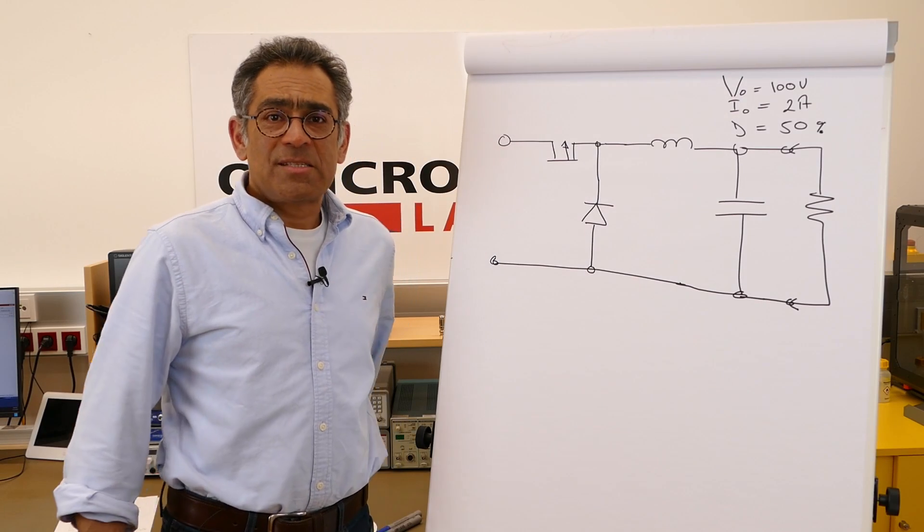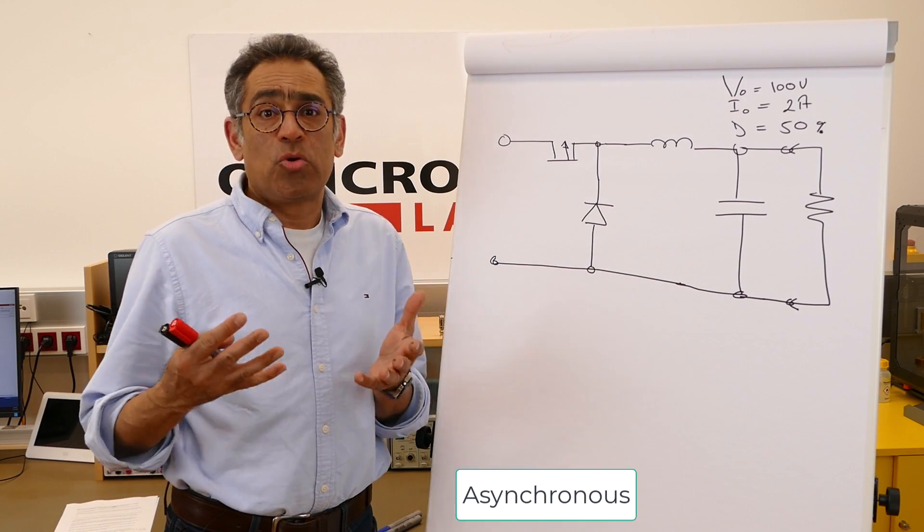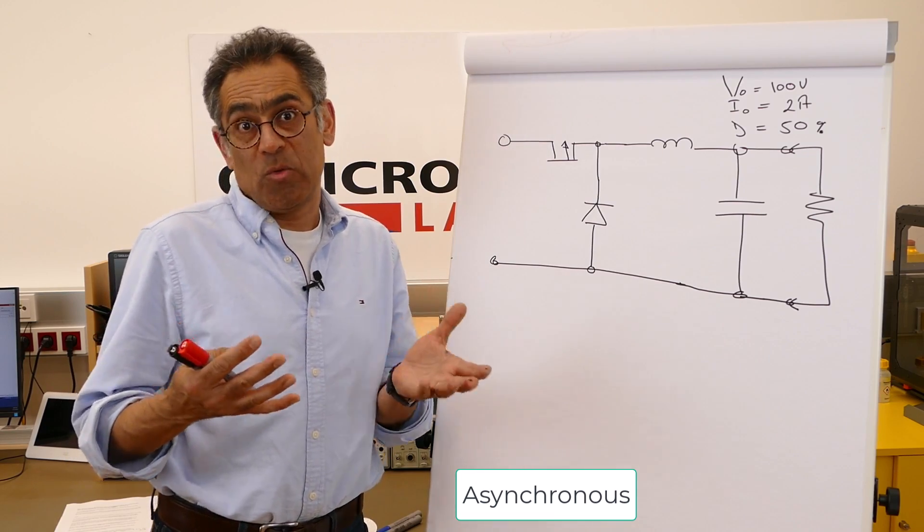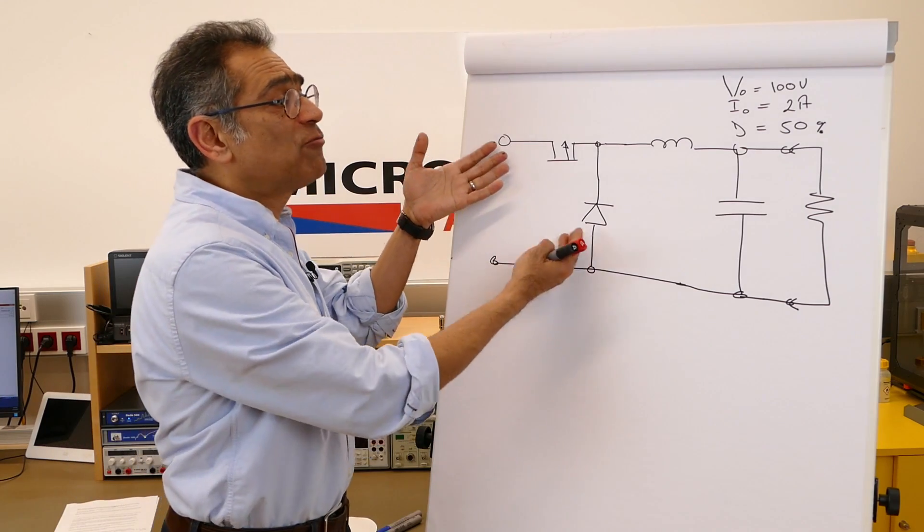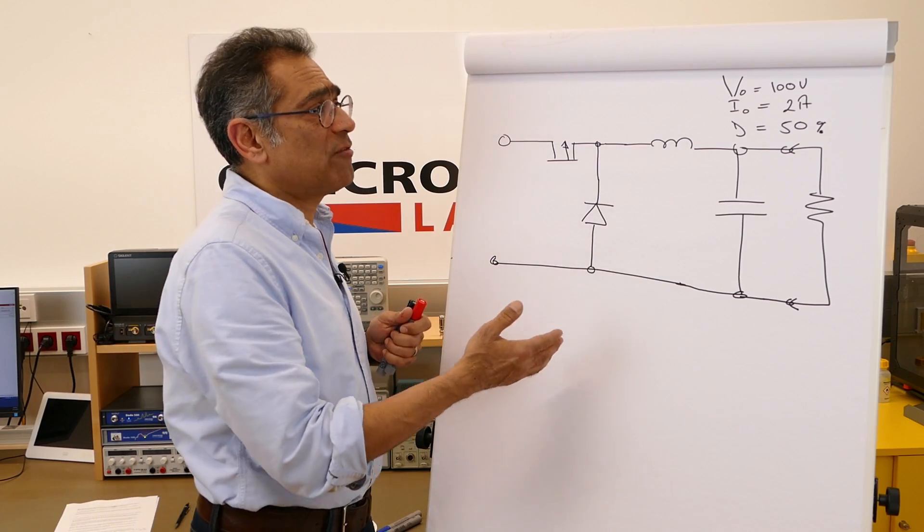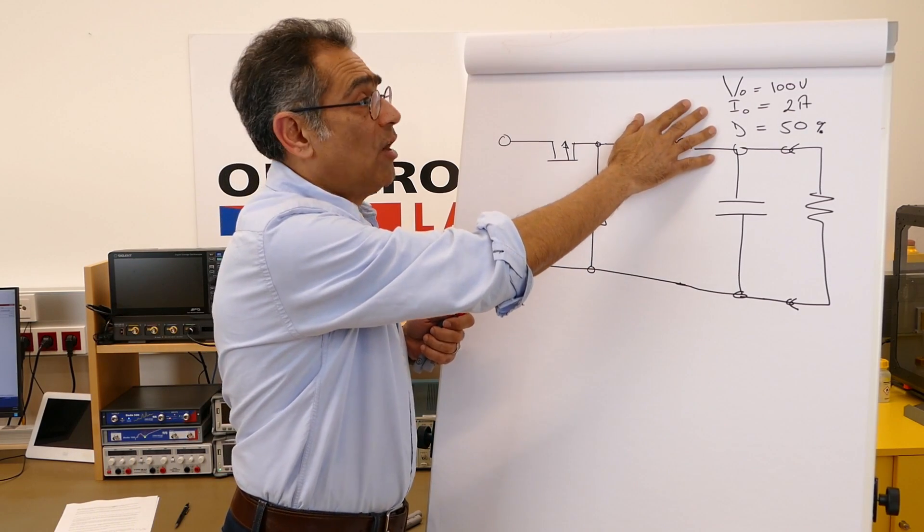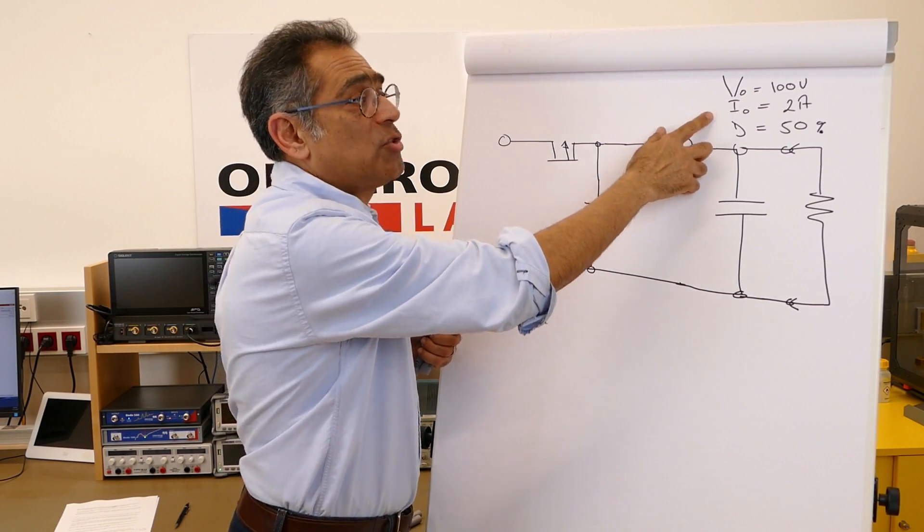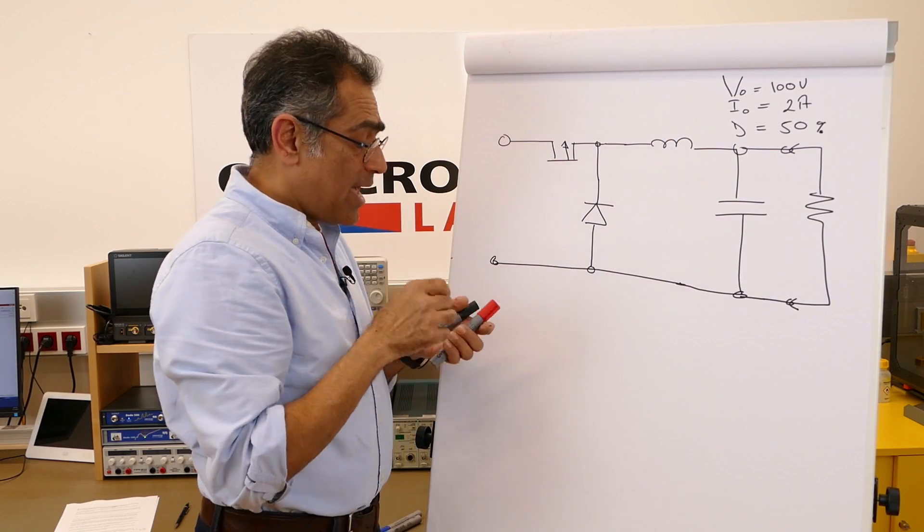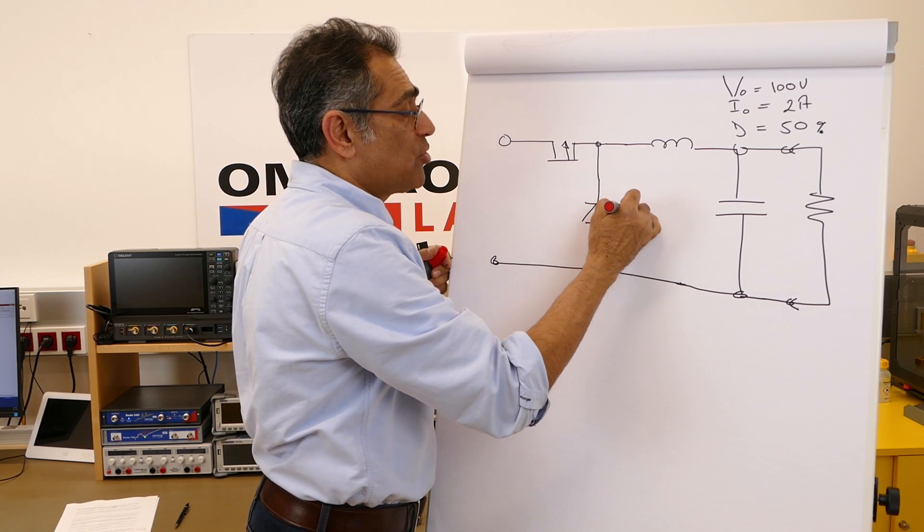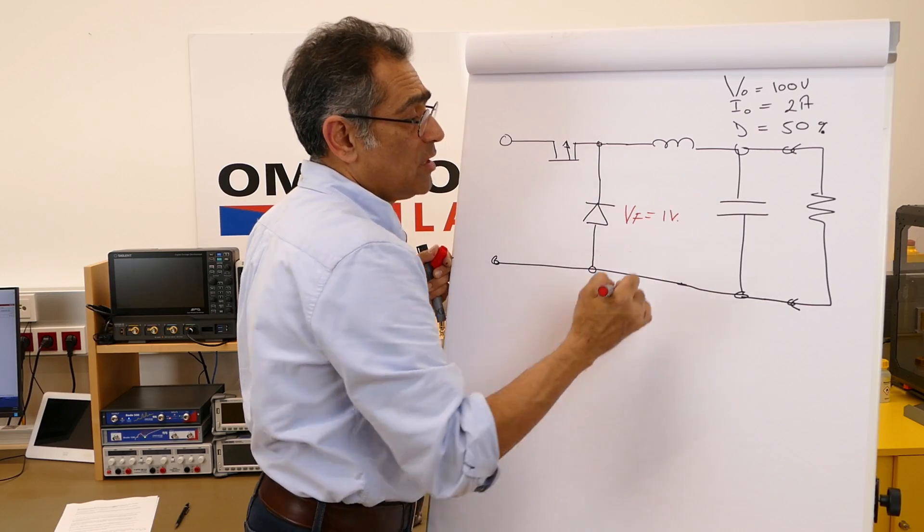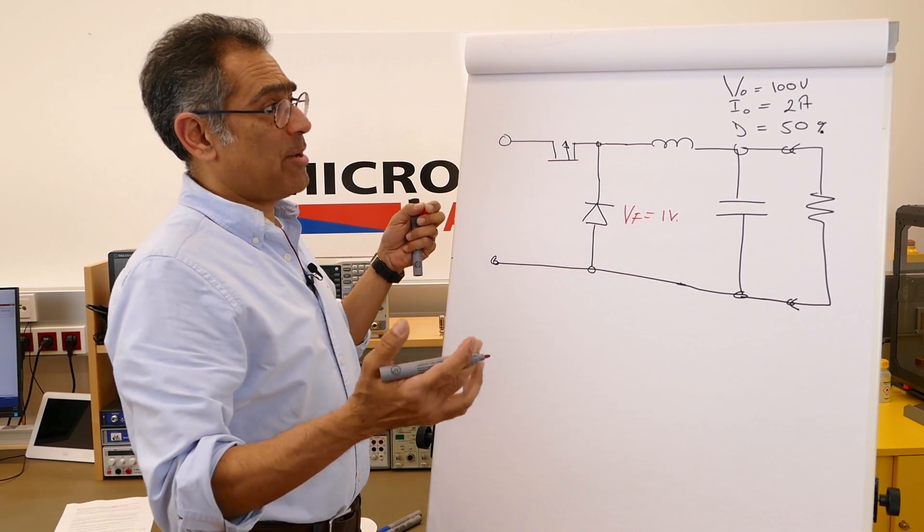So first let's talk about asynchronous or normal switching. When we talk about a buck converter we typically just talk about the normal one which is asynchronous switching. I have drawn the simple circuit here. For simplicity let's say that we have got an output voltage of 100 volts, an output current of 2 amps, and a duty of 50 percent. Again for simplicity let's say that the forward drop across this diode VF is equal to 1 volt.